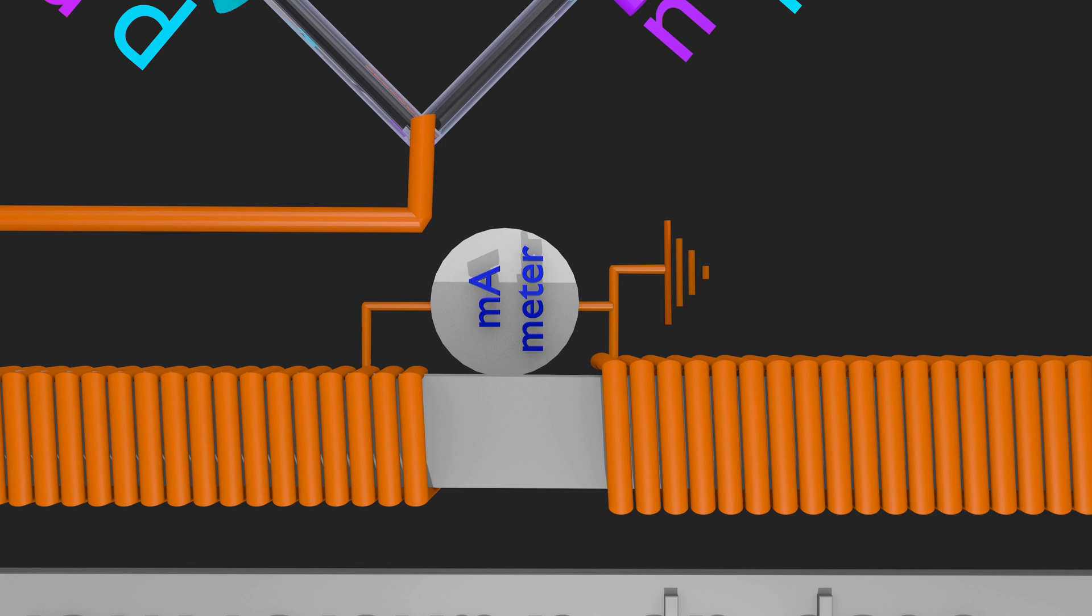A milliampmeter or MA meter is placed at secondary of high-tension transformer. It indicates tube current. DC current required for moving coil MA meter is provided by rectifiers.